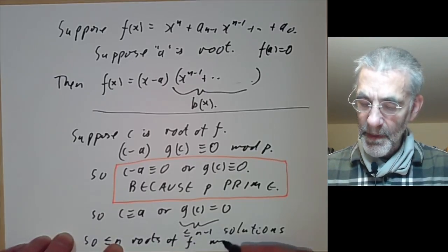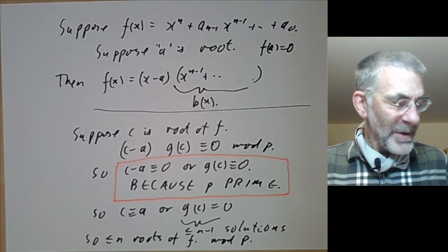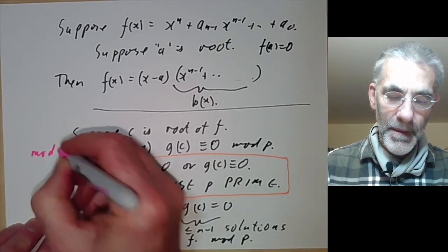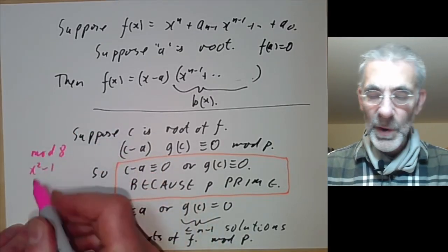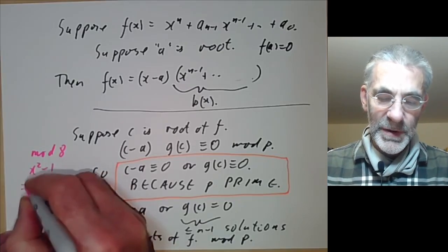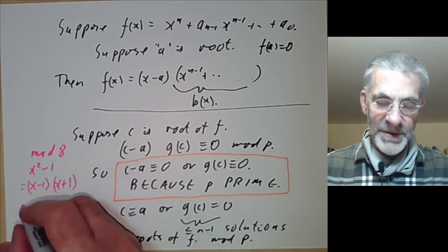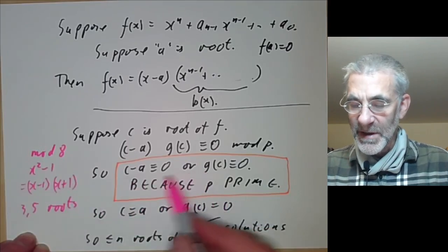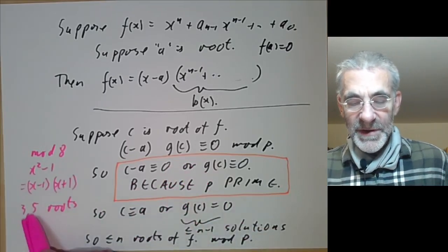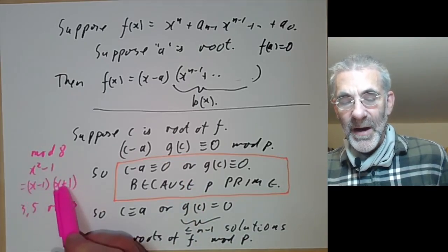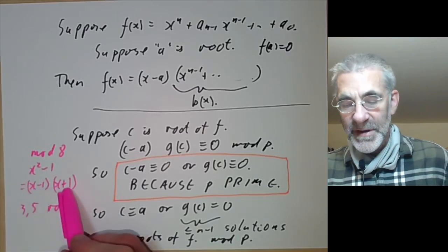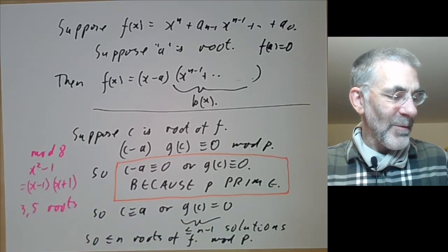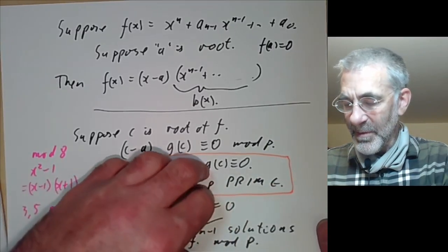This definitely fails if p is not prime. Mod 8, x² − 1 has root x = 1, so we write it as (x − 1)(x + 1). But 3 and 5 are also roots of x² − 1 yet not roots of (x − 1) or (x + 1). For x = 3: (x − 1) = 2 and (x + 1) = 4, both non-zero, but 2·4 = 8 ≡ 0 mod 8. Non-zero elements can have a zero product mod 8, but not mod a prime.